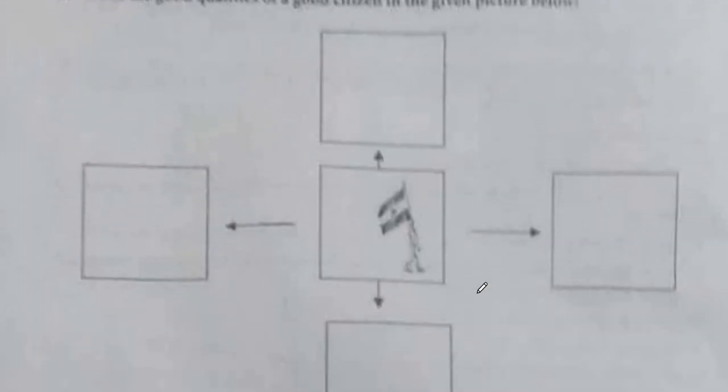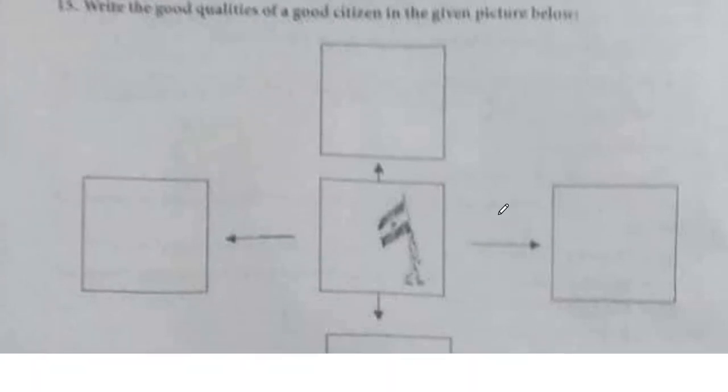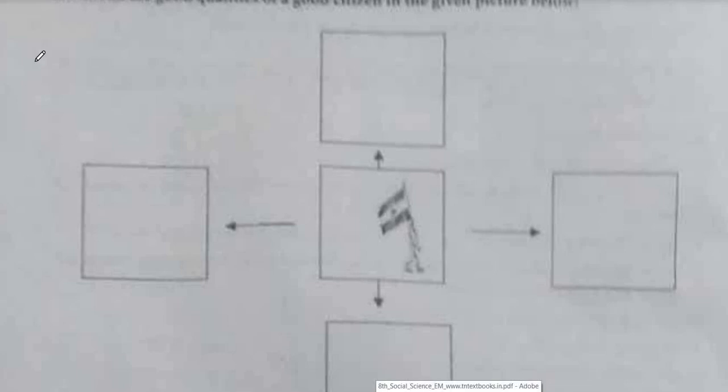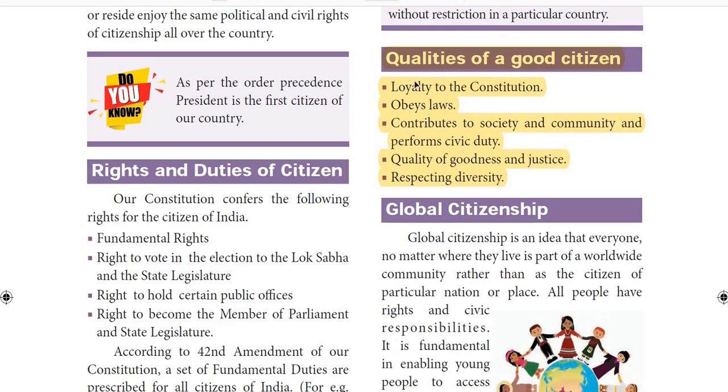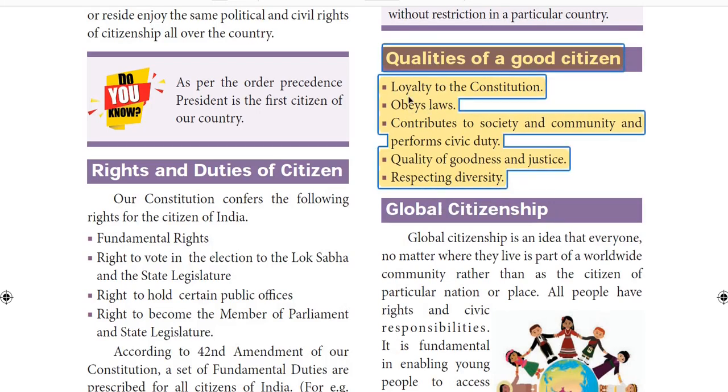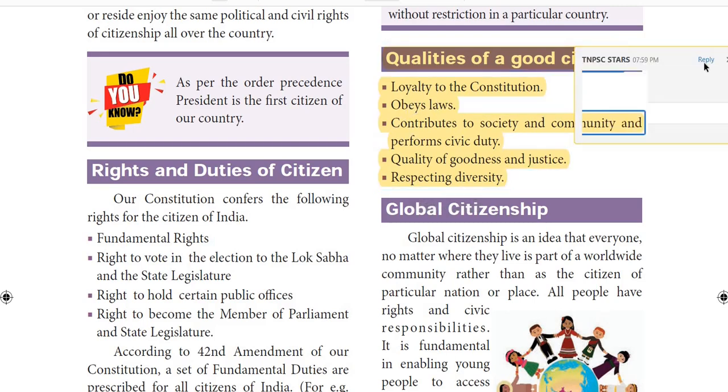Question 15: Write the good qualities of a good citizen. There are 4 points listed on page 179 of the textbook. Question 16: From the pictures given below, which picture shows Overseas Indians Day? The answer is option C — which shows India-related imagery.